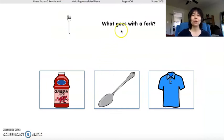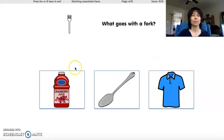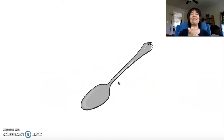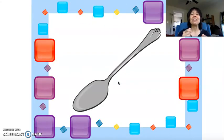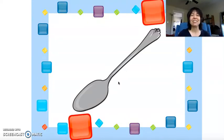Good job! What goes with a fork? A shirt? Juice? A spoon? Yes! A fork and spoon go together. You eat with a fork and a spoon! Good job!